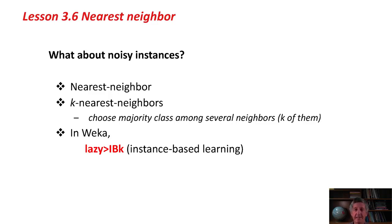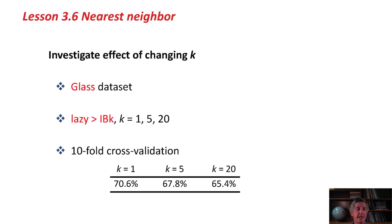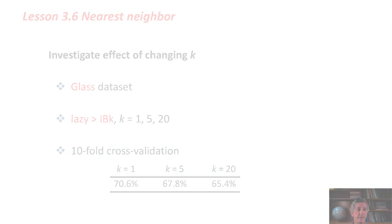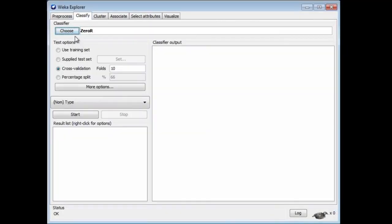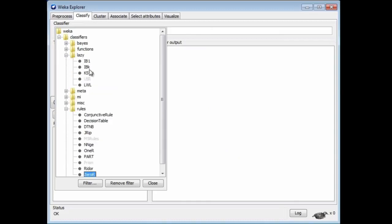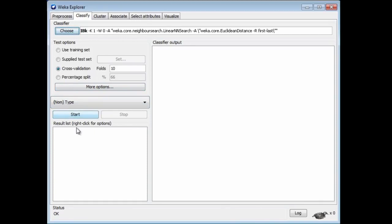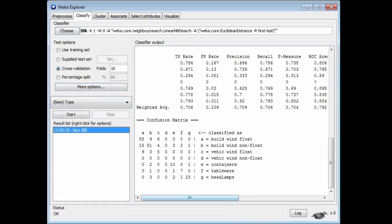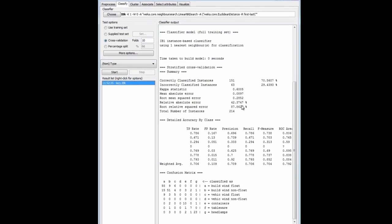Let's open the Glass data set, which is here. Go to Classify, and choose the lazy classifier IBK. Let's just run it, and we get an accuracy of 70%, 70.6%. The model is not really printed here because there is no model, it's just a set of training instances. We're using 10-fold cross-validation, of course.